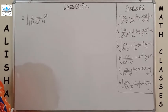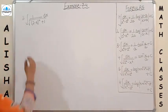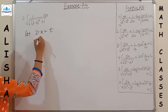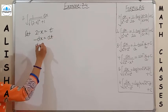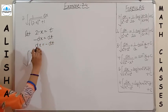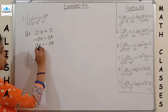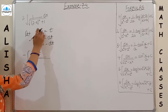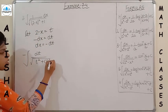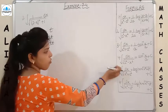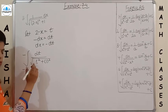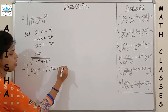Question 3: integration of 1/√((2 − x)² + 1). Let 2 − x = t. Differentiating both sides: −dx = dt, so dx = −dt. Substituting in the integral: it becomes −∫ dt/√(t² + 1²). This is again of the form dx upon √(x² + a²), so the formula gives −log|t + √(t² + 1)| + C.